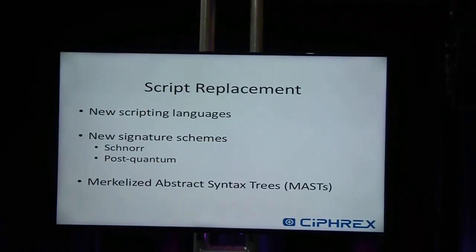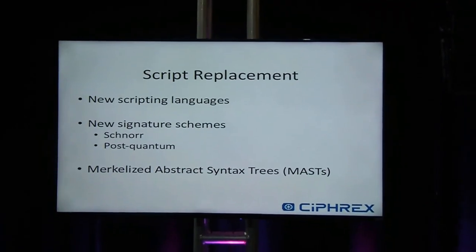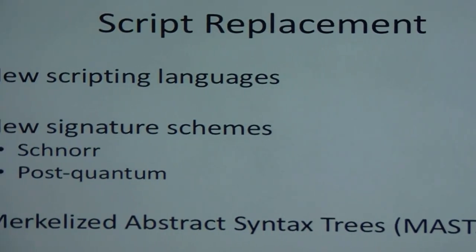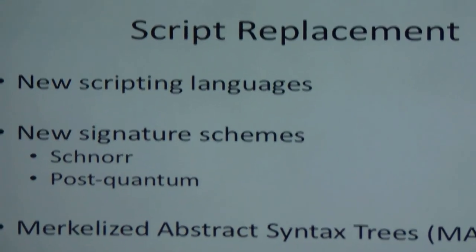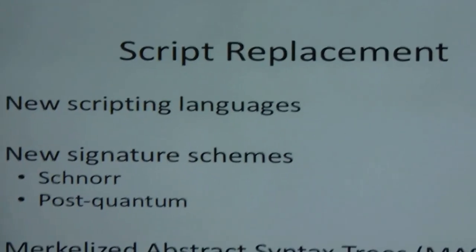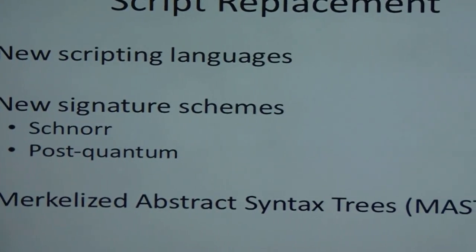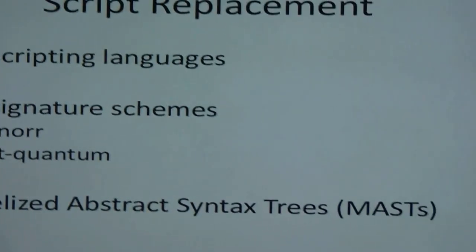There could be many different ways that a transaction could be authorized. For instance, in the case of a multi-sig transaction, there could be different signers. Merklized Abstract Syntax Trees allow us to compress all this by removing all the parts of the program that do not execute.